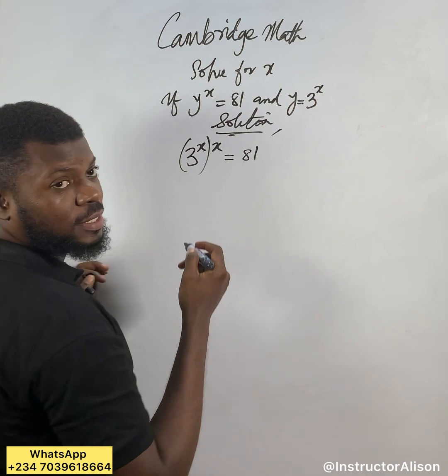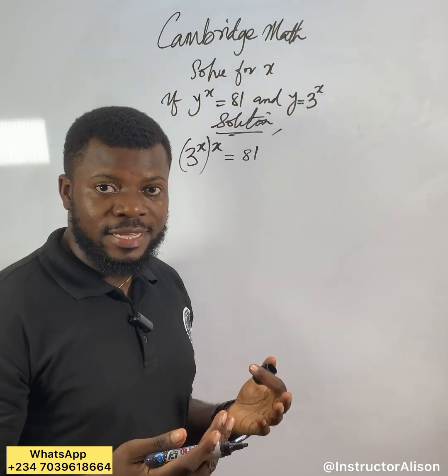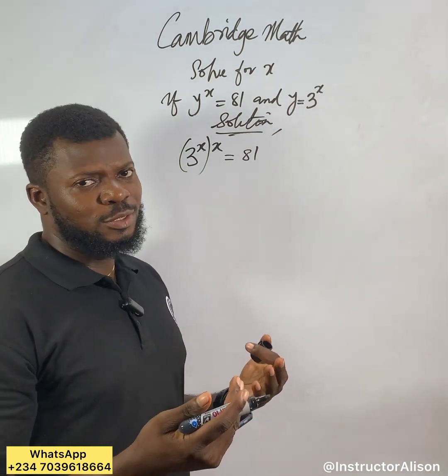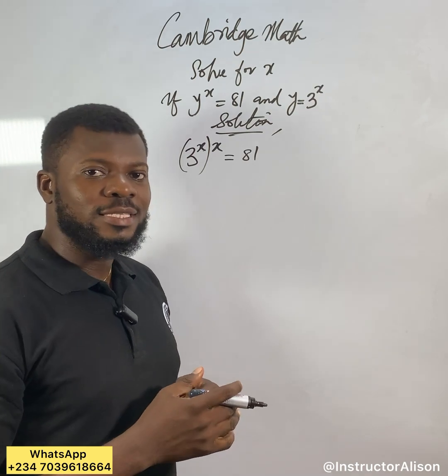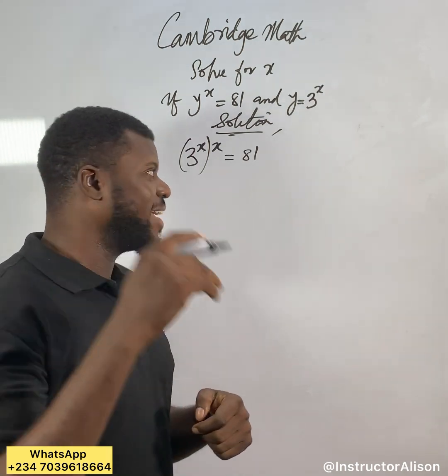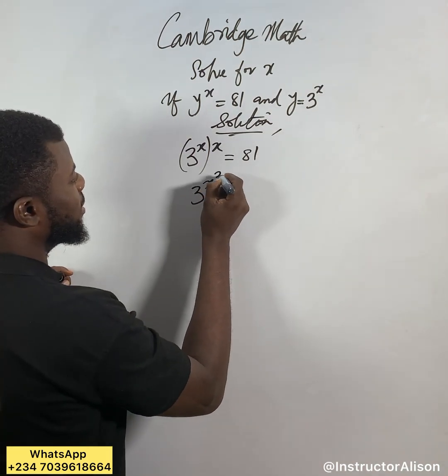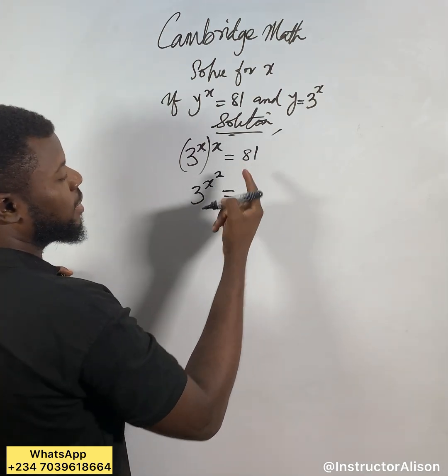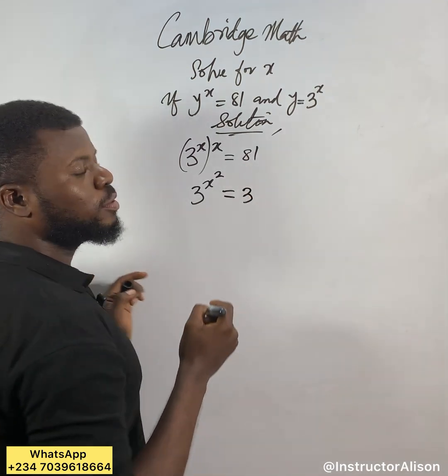Which will be the next thing? I'm going to say x times x. Now x times x, you say 2x? No, it will be x times x. X squared. So you can say 3 to the power of x squared equal to 81.